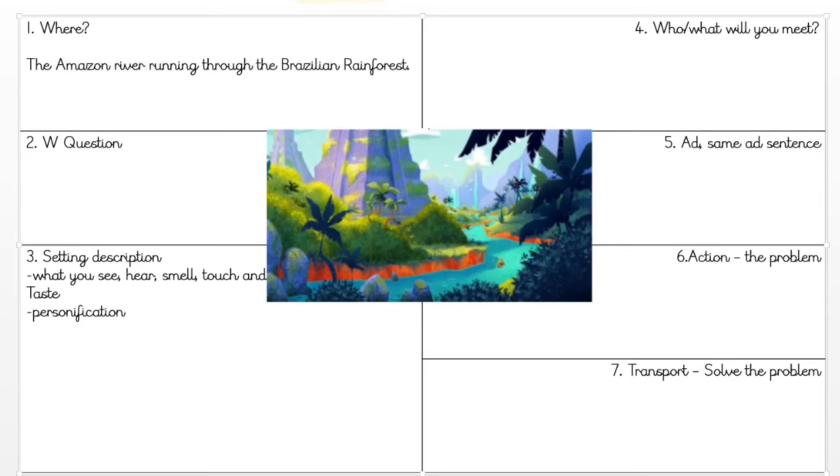For my W question, I'm going to say where does the river take us. However, looking at that, maybe a little bit boring, so I'm going to use an adjective to describe the river. The adjective I'm going to choose is meandering - meandering means when it is going through lots of these bends in the river, it's not just one straight line. So, where does the meandering river take us?